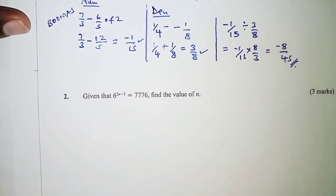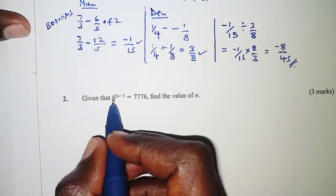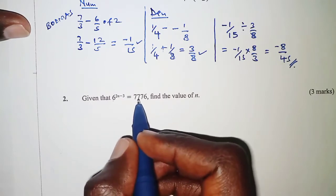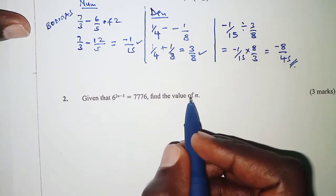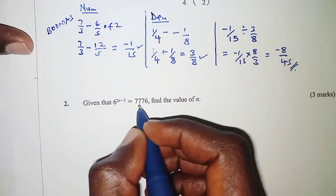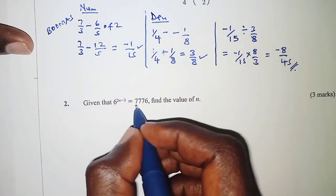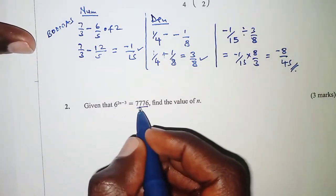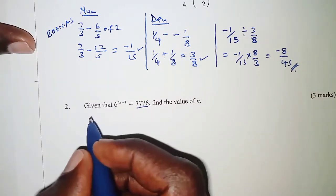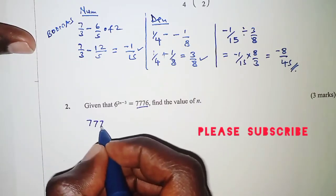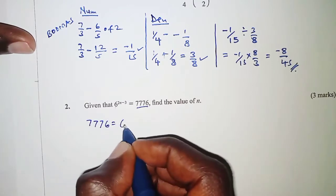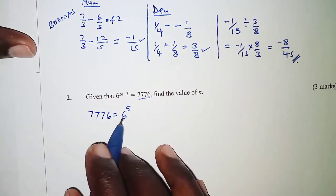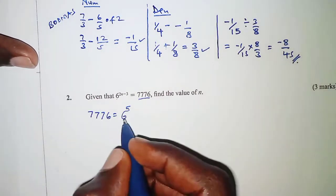Next, question 2: given that 6 raised to the power 2n minus 3 is 7776, find the value of n. The first step is to express the right-hand side in index form. When we factorize 7776 we realize it gives us 6 to the power 5.